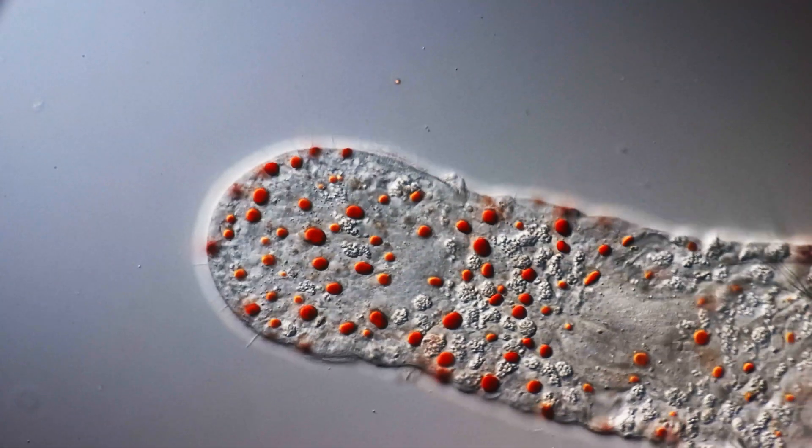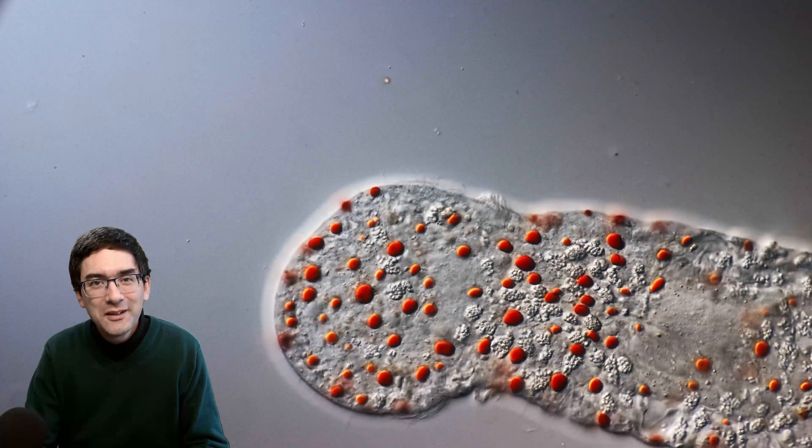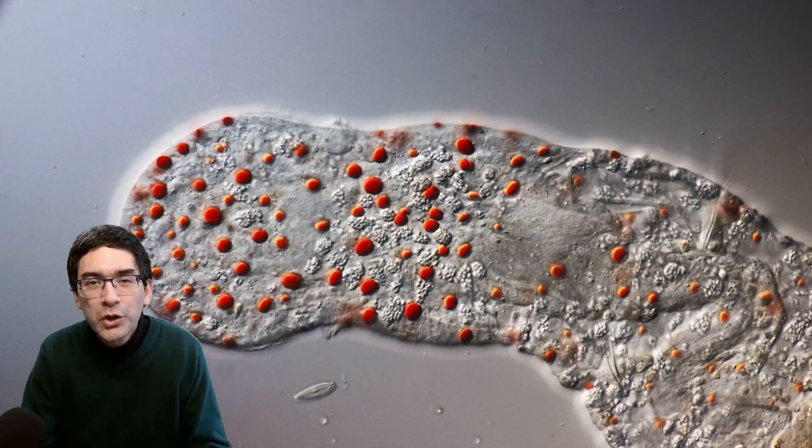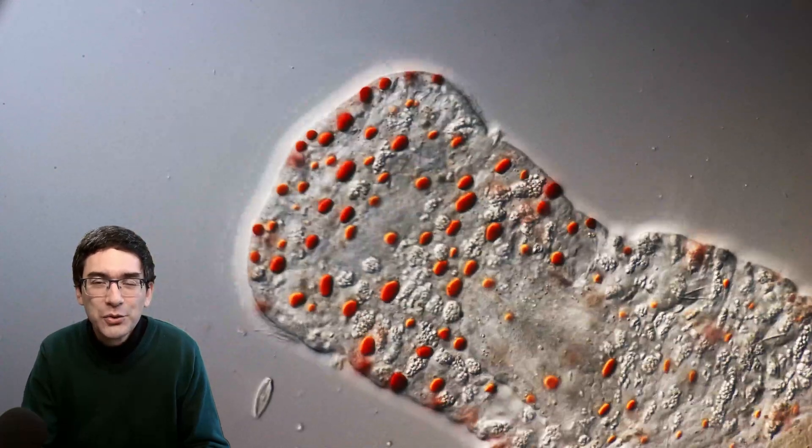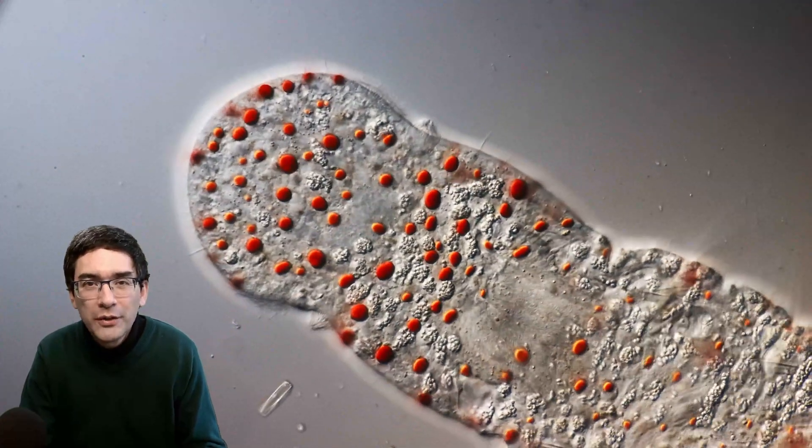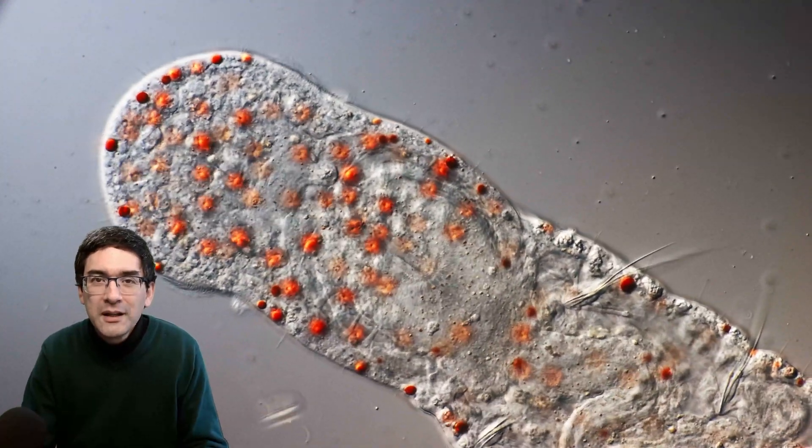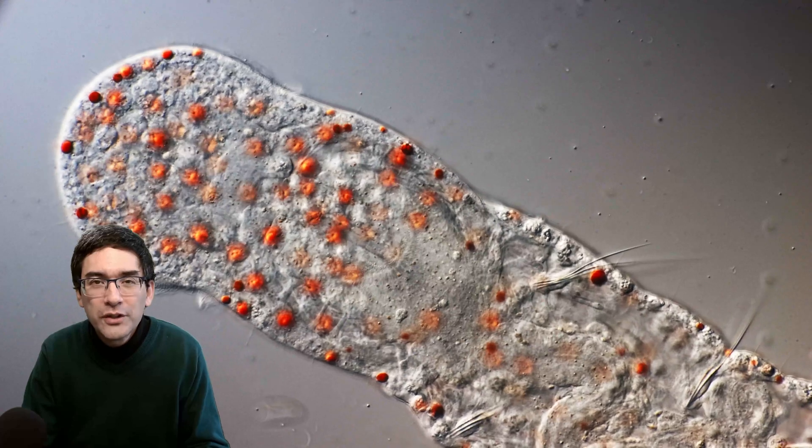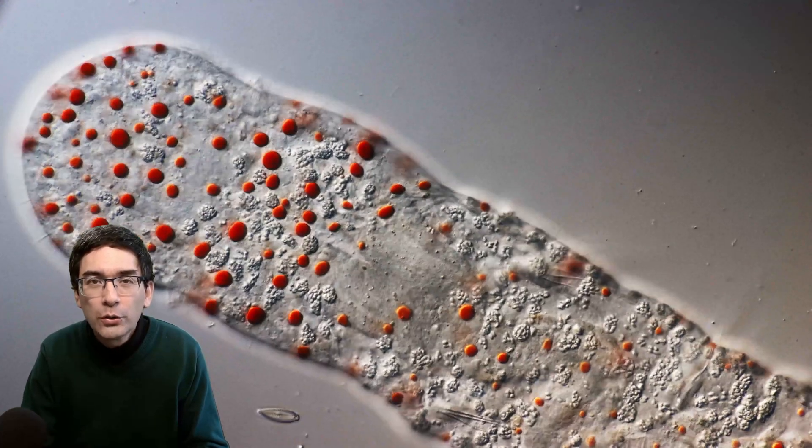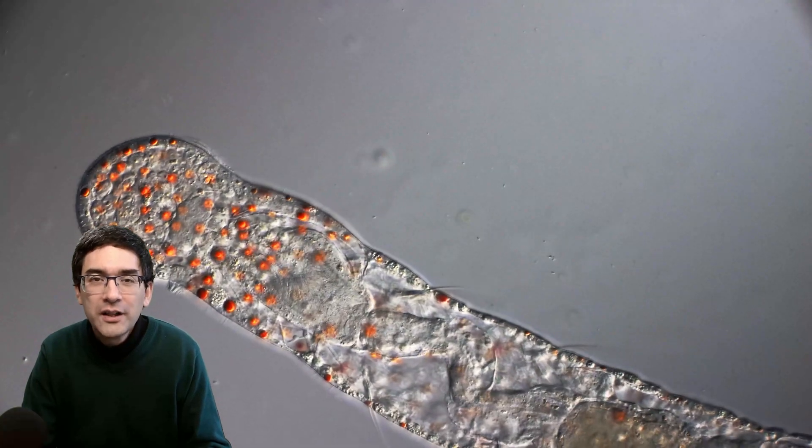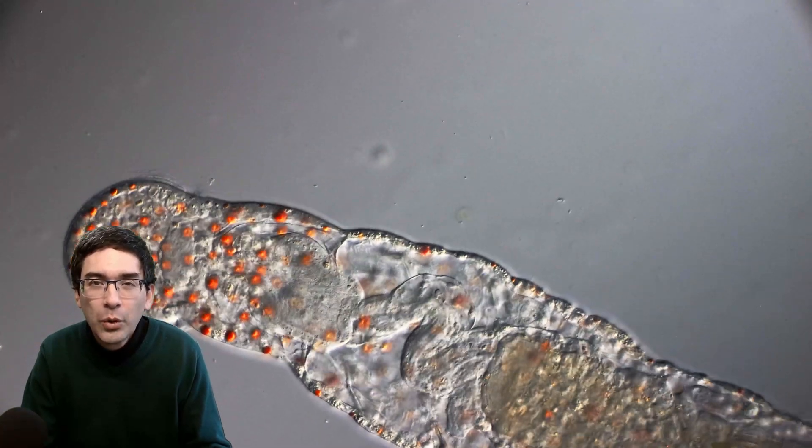There is one typical characteristic of this worm, and that is those orange-red round structures that you can find. In many cases, those round structures are on the head of the worm, but in some species they're also scattered throughout the body. Those round orange structures are called oil globules or oil droplets, and they are actually what give the worm its name.